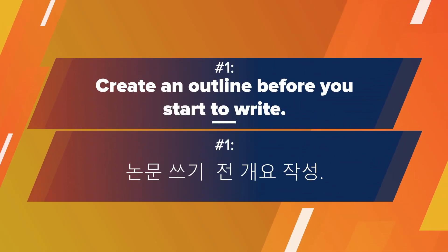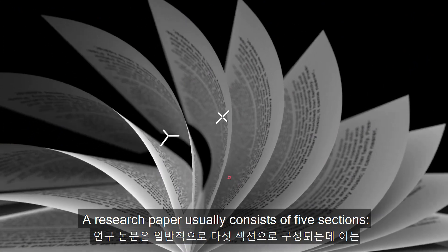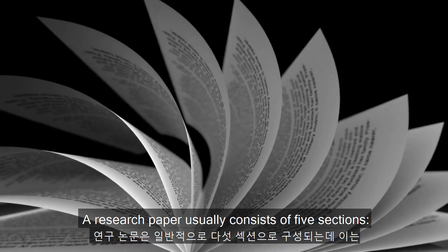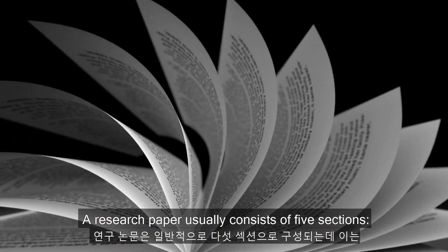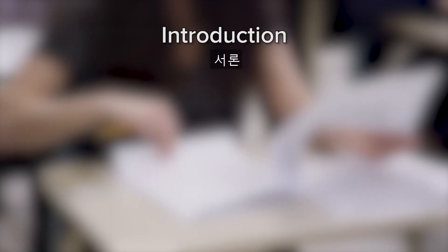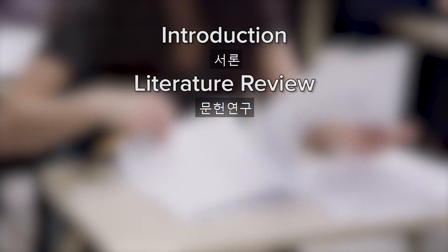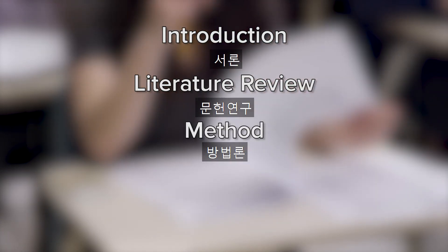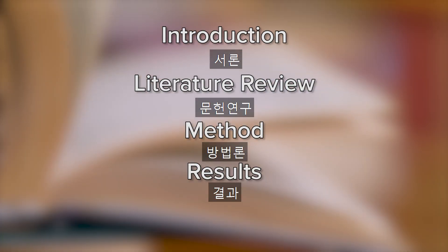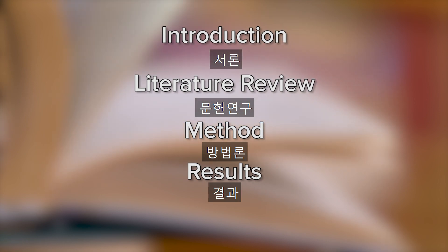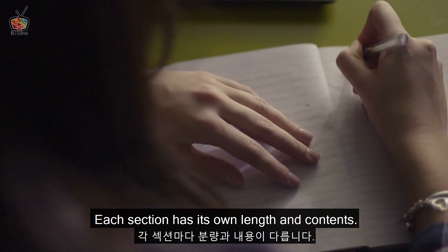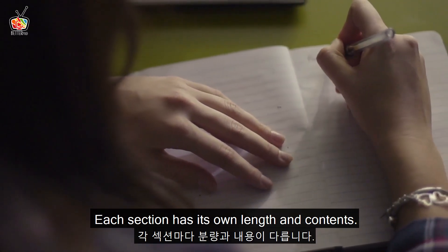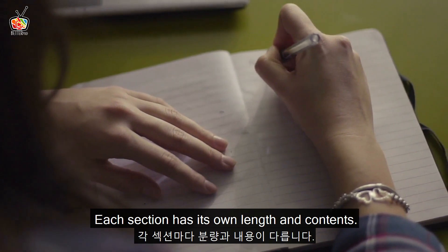Number one: create an outline before you start to write. A research paper usually consists of five sections: introduction, literature review, methods, results, and discussion and conclusion. Each section has its own length and contents.